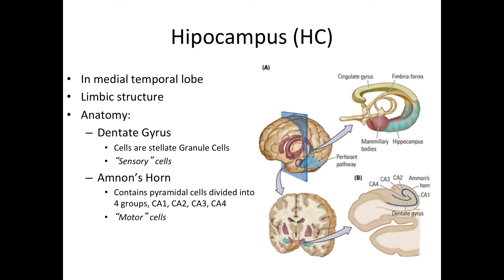The hippocampus means seahorse in Greek. It is a limbic structure that extends in a curve from the lateral neocortex of the medial temporal lobe towards the brain's midline, and it has a tube-like shape. It consists of two gyri: Ammon's horn and the dentate gyrus. Ammon's horn contains pyramidal cells and the dentate gyrus contains stellate granule cells. The pyramidal cells of Ammon's horn are divided into four subgroups: CA1, CA2, CA3, and CA4, with the dentate gyrus in the middle.